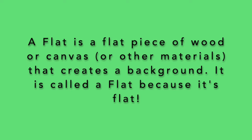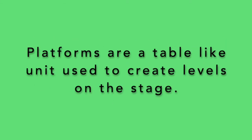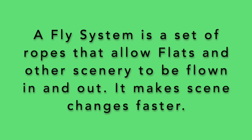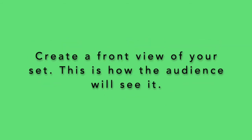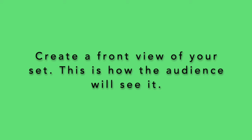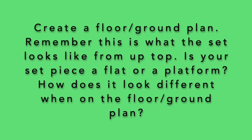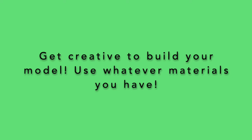A flat is a flat piece of wood, canvas, or other materials that creates a background — it is called a flat because it's flat. Platforms are a table-like unit used to create levels on the stage. A fly system is a set of ropes that allow flats and other scenery to be flown in and out, making scene changes a lot faster. To make a set model, first think about what the setting of your story is — when and where does your story take place? Create a front view of your set — this is how the audience will see it. Create a floor or ground plan, which is what the set looks like from up top. Is your set piece a flat or a platform? How does it look different on the floor plan? Get creative to build your model using whatever materials you have. Now create your model box. Here are some examples from other students.